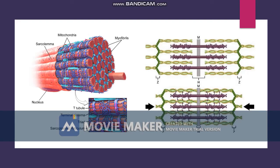So what you see here is a zoomed-in picture of a muscle fiber. In this image, the most important structures we're going to explain right now are the sarcolemma and the t-tubule. The sarcolemma is important for conducting an action potential from the neurons to the muscles.